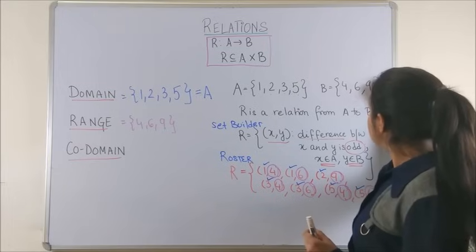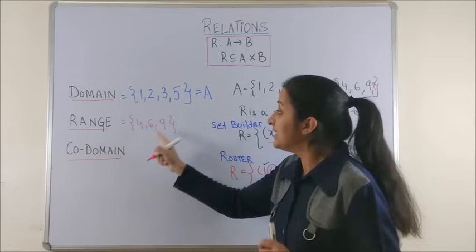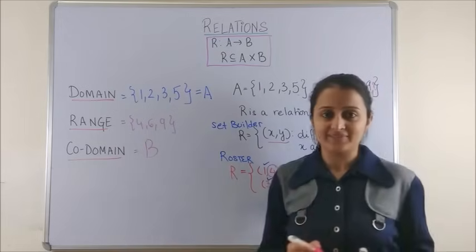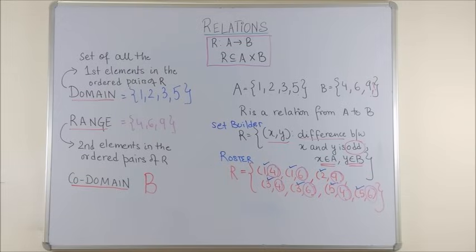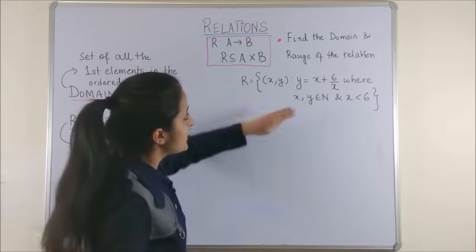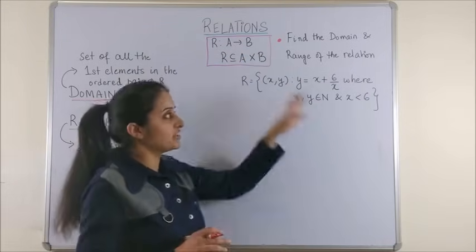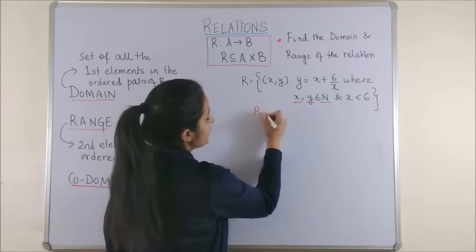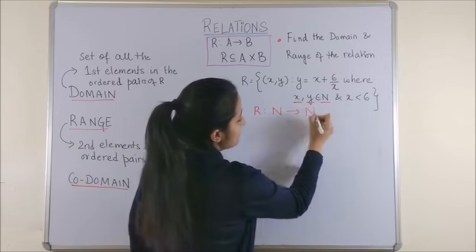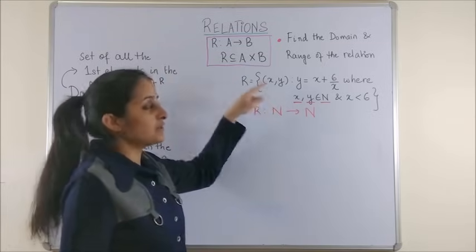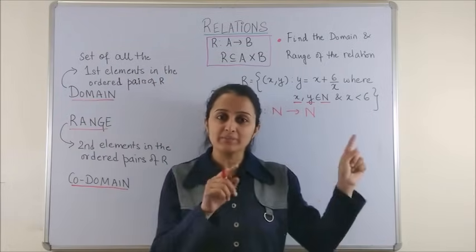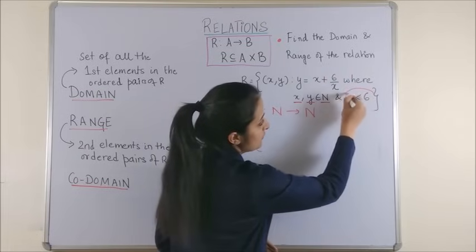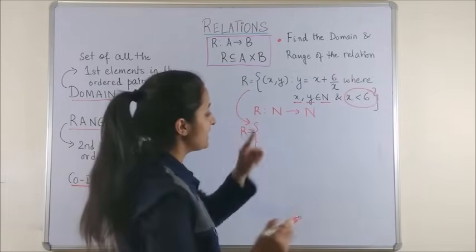However, suppose we had some extra element here which was not connected with A. Then, that would not be in range. And, co-domain is always the entire second set. Please have a look. Alright, so the next question says, find the domain and range of the given relation. Now, if you see, your X and Y have been given to be belonging to N. That means, your relation has been defined from the natural numbers to the set of natural numbers. Now, whenever you have to write the domain and range, it is very important to convert your set builder form to the roster form. So, let's do that. All those ordered pairs where your Y could be expressed this way. But, don't forget, X is always less than 6.